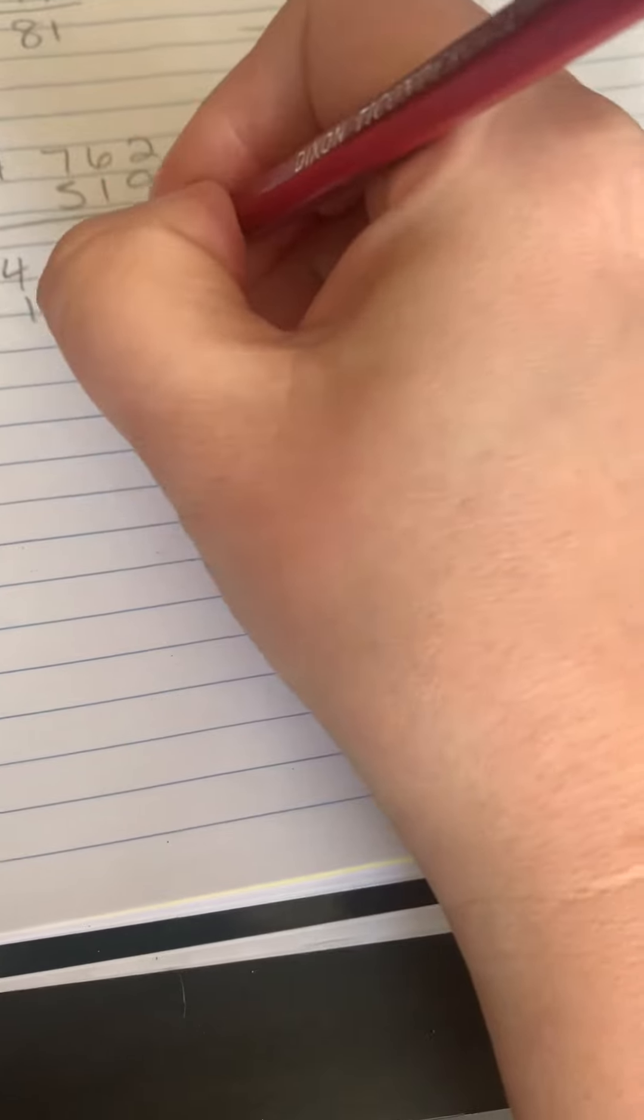And we have 700 and 500 which would give us 1,200, and 6 and 1 which would give us 70, and 2 and 9 which would give us 11.